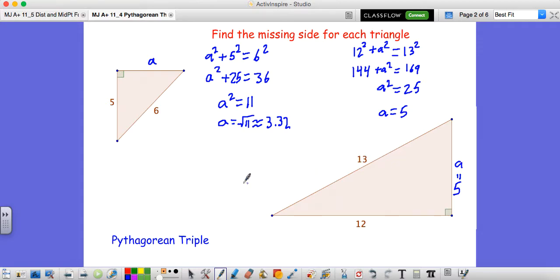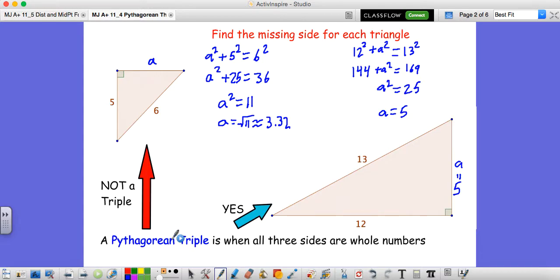Now we get into this idea of a Pythagorean triple. All a Pythagorean triple is is when you have all three sides that are whole numbers. Obviously this top left triangle satisfied the Pythagorean theorem, all right triangles do. But it's not a Pythagorean triple because 3.32 or the square root of 11 is not a whole number. Whereas in this example here, we had side lengths of 5, 12, and 13. All of those are whole numbers, so this triangle would be considered a Pythagorean triple.